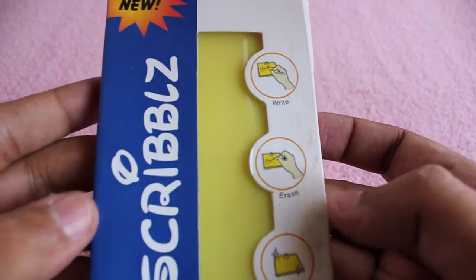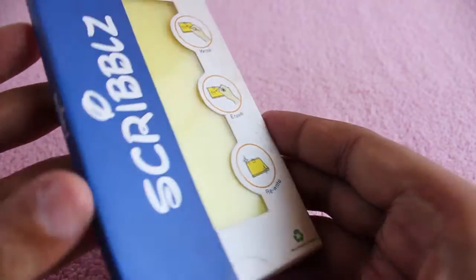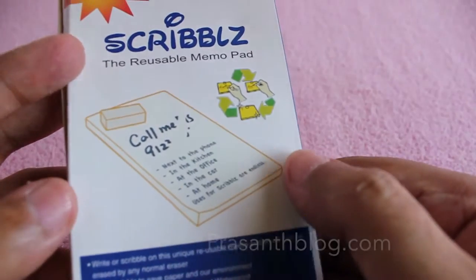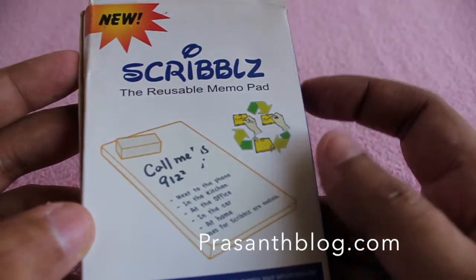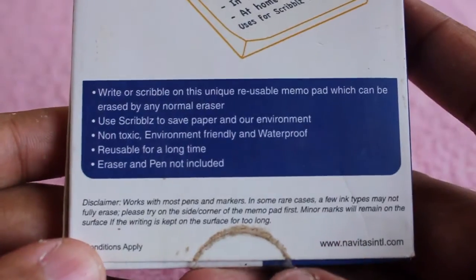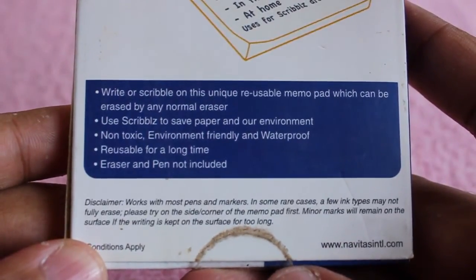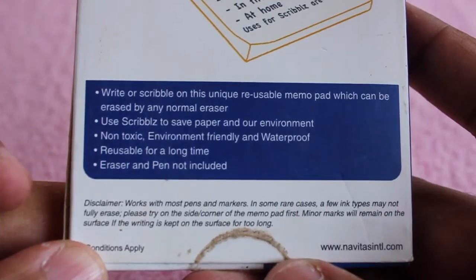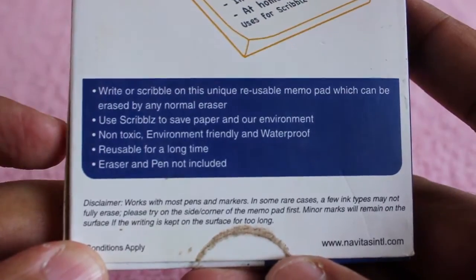Hello guys, let's take a look at this Scribblz reusable memo pad. It's an eco-friendly product that can be reused again and again. It's not made out of paper, but you can still write on it and erase it like regular paper.